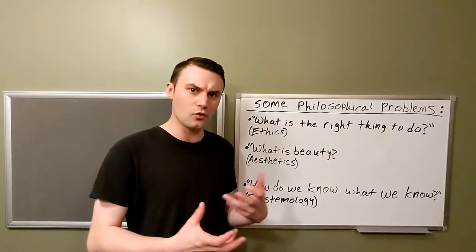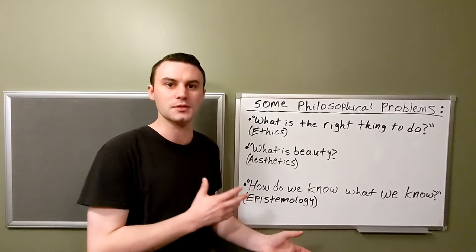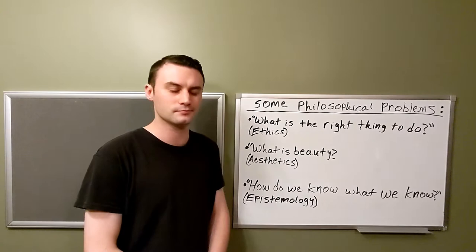For example, the question of what the right thing to do is—there's your ethics. The question of what is beauty gives us our aesthetics. Some philosophers want to know what knowledge is and how we know what we know—there's your epistemology. We've got our philosophical problems then. It must be these big questions that have occupied philosophers' thoughts for centuries. Philosophical problems, the problems that concepts are connected to, are questions like these. That was kind of easy. A little too easy, but I'll take it.